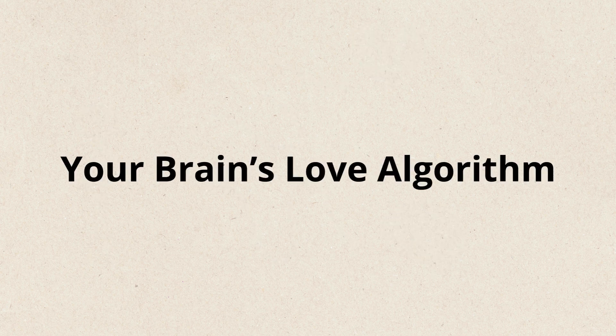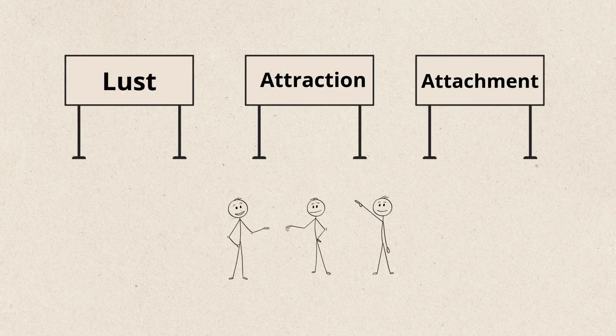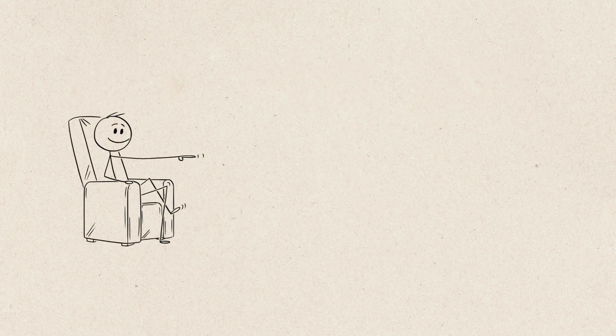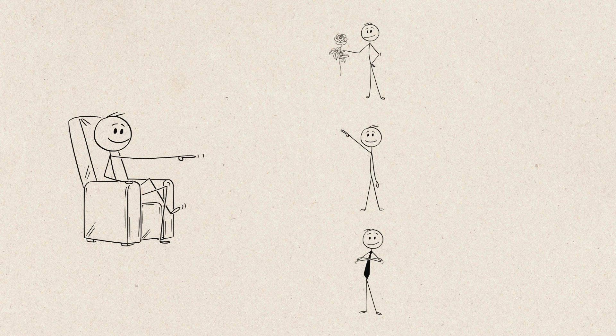Your brain operates through three main systems: lust, attraction, and attachment. Imagine it like a reality dating show happening inside your head, where each system plays a role in deciding who stays and who goes.